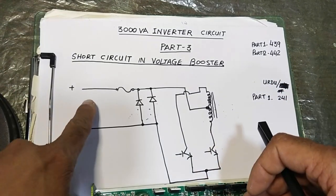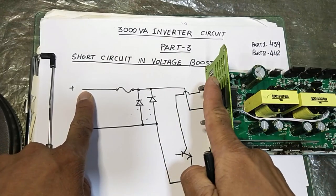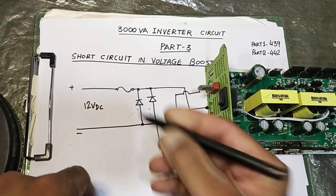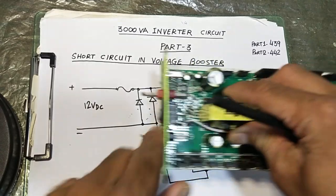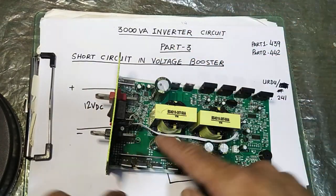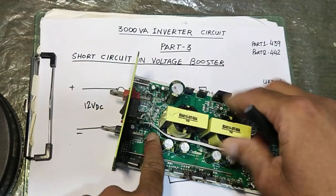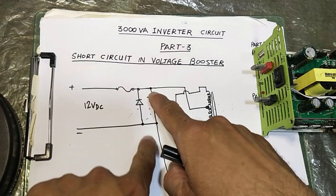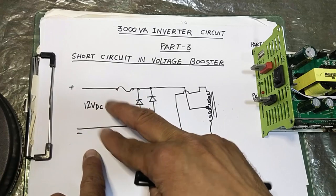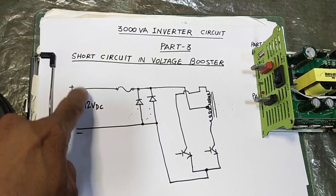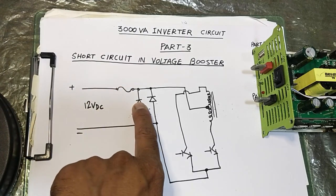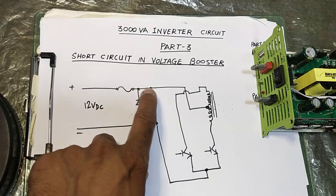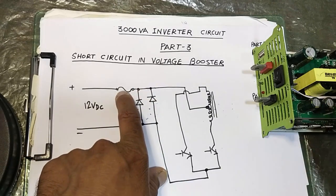Here we have the positive input terminal and the negative input terminal. We apply a 12-volt DC battery. There is a fuse inside for protection. We also have two reverse polarity protector diodes connected here — positive and negative. In this configuration these diodes are reverse biased.